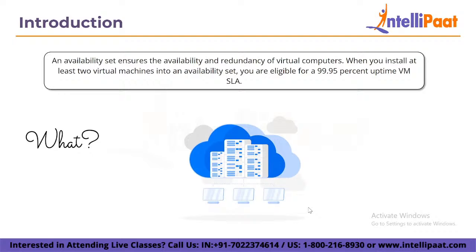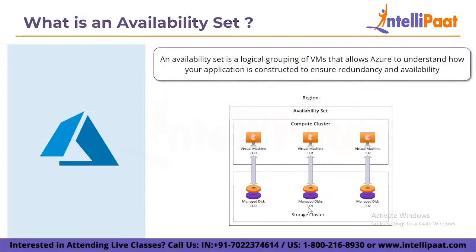Microsoft Azure assigns an update domain and a fault domain to each virtual machine deployed in an availability set. An availability set is a logical grouping of virtual machines that allows Azure to understand how your application is constructed, to ensure redundancy and availability. We recommend that two or more virtual machines be established within an availability set to deliver a highly available application and to achieve 99.95% Azure SLA.